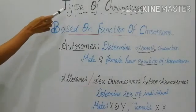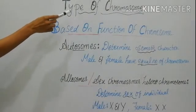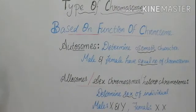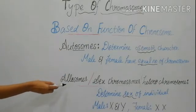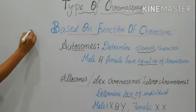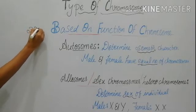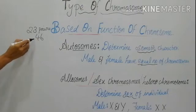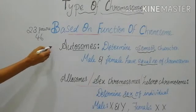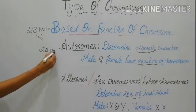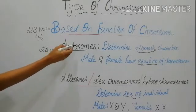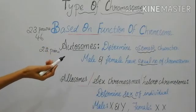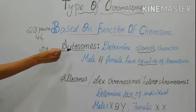Next, we can see the types of chromosomes based on their function. Based on function, there are two types: autosomes and allosomes. We know there are 23 pairs, that is 46 chromosomes in total. Autosomes involve 22 pairs and determine somatic characters — that is, body characters such as our traits, behavior, and growth.